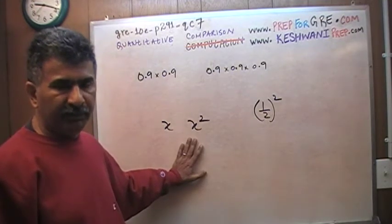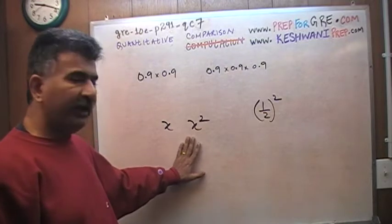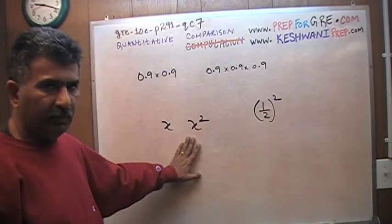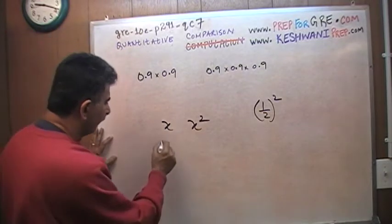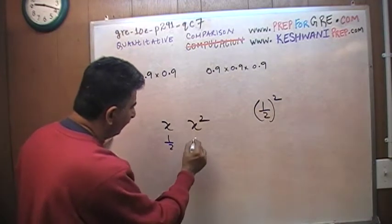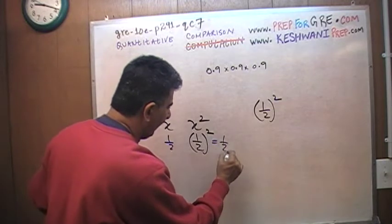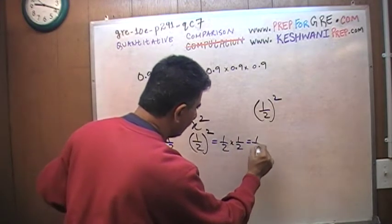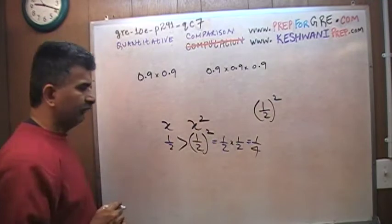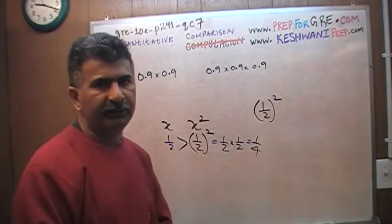If x happens to be more than 1, then it would be true. But what if x were between 0 and 1? If x were a fraction, for example, if x is half, then half versus half squared, half squared is the same as half times half, which is a quarter. A quarter is actually less than a half.